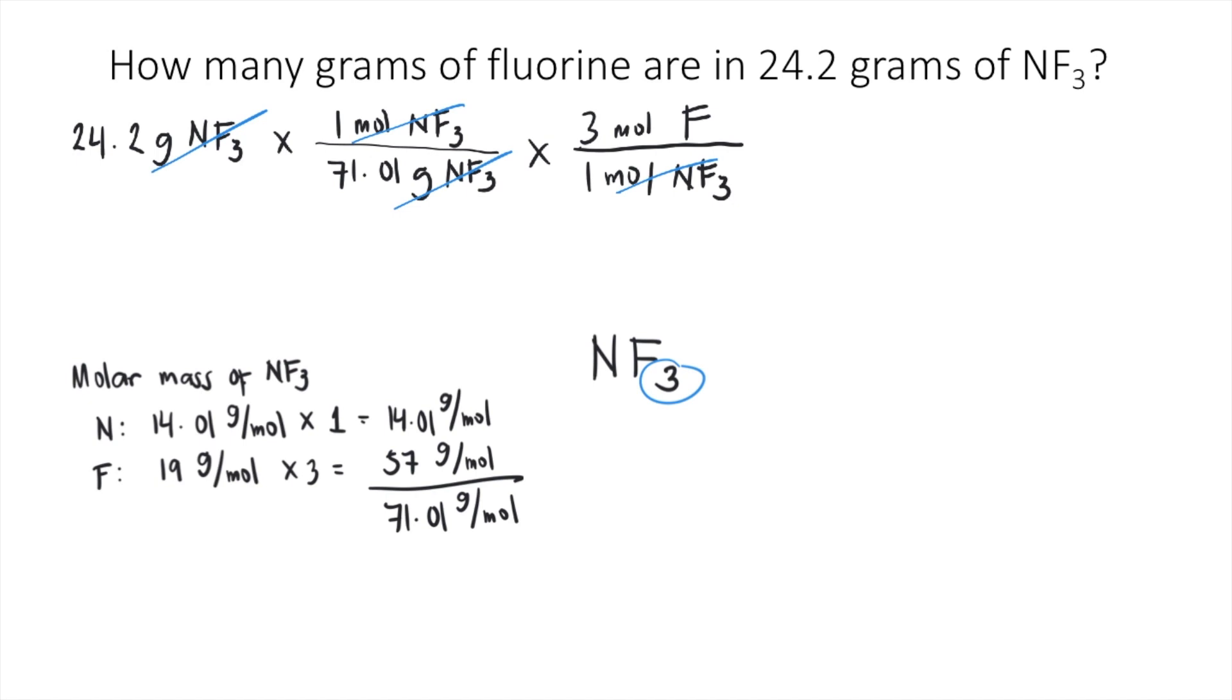And finally, if you have the moles of fluorine, you can convert this now to grams of fluorine using the molar mass of fluorine. Again, in the periodic table, the molar mass of fluorine is 19 grams per mole. So that means for every one mole of fluorine, that's equivalent to 19 grams of fluorine.